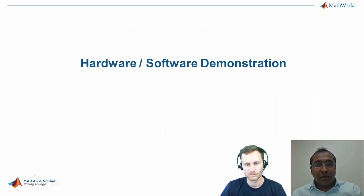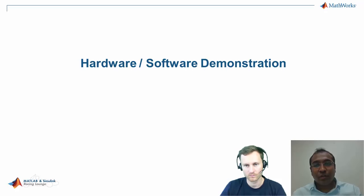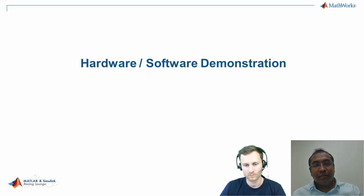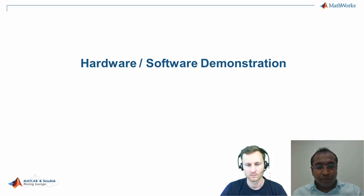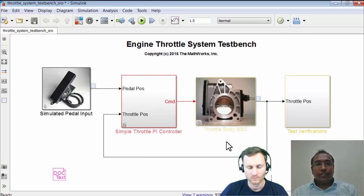Now let's quickly see how our models are structured. I'll first show you how my desktop simulation works, followed by the real-time simulation. Let me open my Simulink model. This is our desktop simulation — I have a Simulink-simulated pedal input which I'm feeding into my controller, and my controller is giving the command to my throttle body.